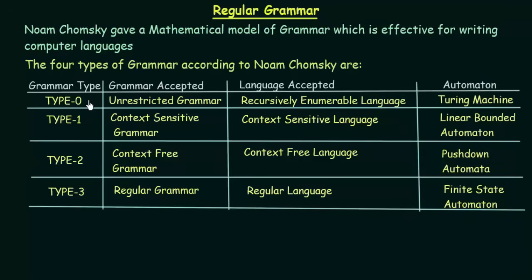The types of grammar according to Noam Chomsky are Type 0, Type 1, Type 2, and Type 3 Grammar. We will discuss them starting from the bottom, so first let's see Type 3 Grammar. In Type 3 Grammar, the grammar accepted is regular grammar, which we will be studying in this lecture.